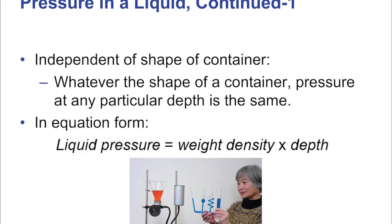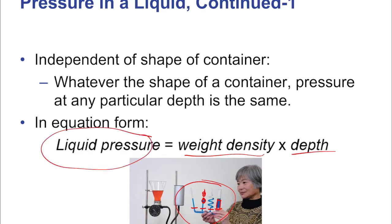Pressure is independent of the shape of the container — whatever the shape, the pressure at a particular depth is the same. That's the lake and swimming pool analogy. With various fancy demonstration devices — curly shapes, different spheres — all would have the same pressure at the same depth regardless of shape, even a much wider one. Because the force per area is the same — that's what pressure is. So it's weight density times depth, which is the actual form of liquid pressure, often called hydrostatic pressure.